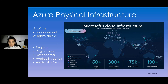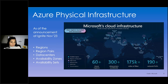There's also the concept of region pairs, in which two regions within the same geography are paired. This helps reduce interruptions for workloads running in Azure due to events such as power outages or natural disasters. Azure also comprises availability zones and availability sets.